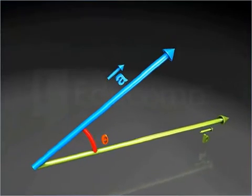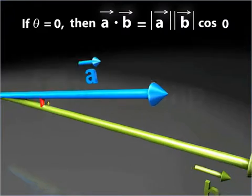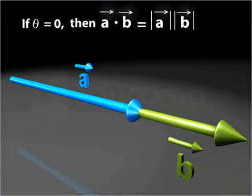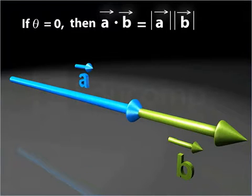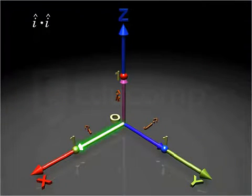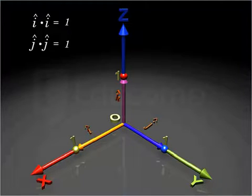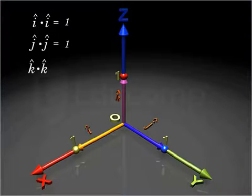The dot product of two vectors is maximum when theta is equal to 0, as cos theta will have its maximum value of 1 when theta is equal to 0. This fact helps us to conclude that the dot product of a vector with itself is equal to the square of its magnitude. Similarly, J-cap dot J-cap is equal to 1, and K-cap dot K-cap is also equal to 1.